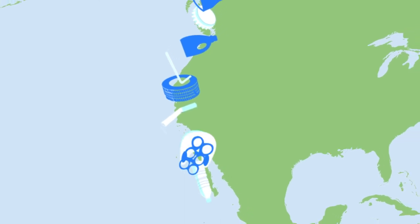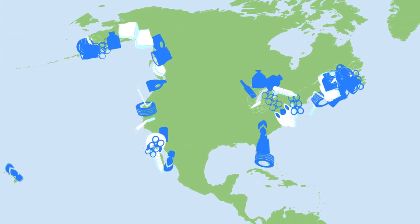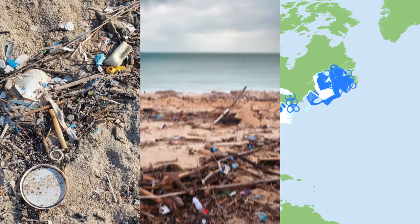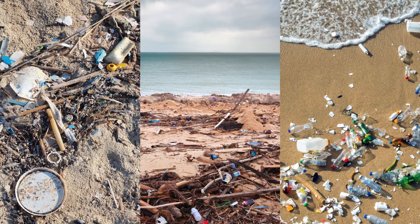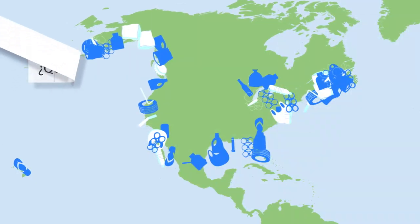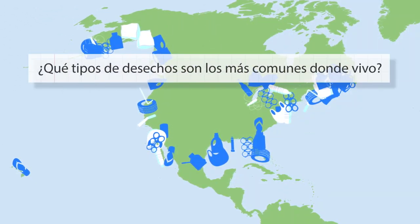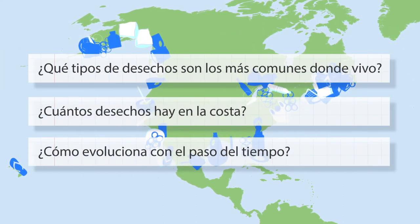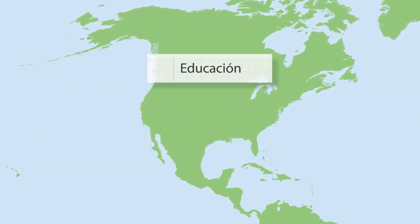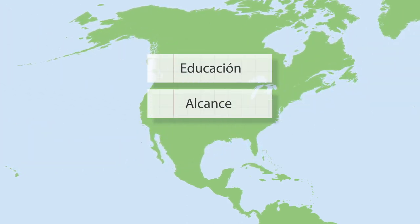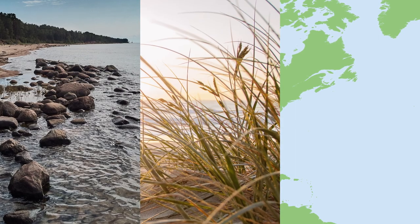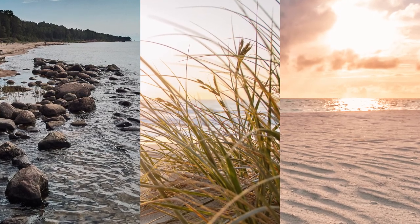Después de cargar los datos, la NOAA los revisa y los agrega a una base de datos más amplia donde se visualiza el panorama de los desechos en nuestras costas. Entonces cualquier persona puede usarlos para preguntarse: ¿Qué tipos de desechos marinos son más comunes donde vivo? ¿Cuántos desechos hay en la costa? ¿Cómo evoluciona con el paso del tiempo? Entender las respuestas a estas preguntas puede guiar la educación, el alcance y otras medidas de prevención, como las políticas públicas. Es el primer paso para mantener nuestras playas y agua limpias.